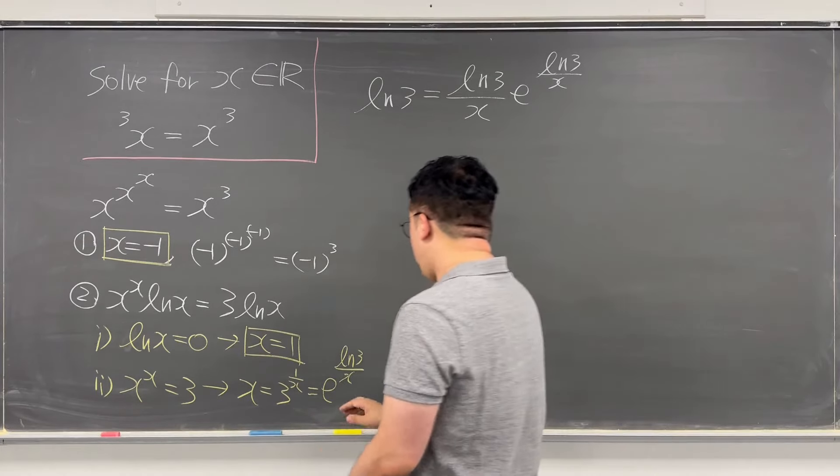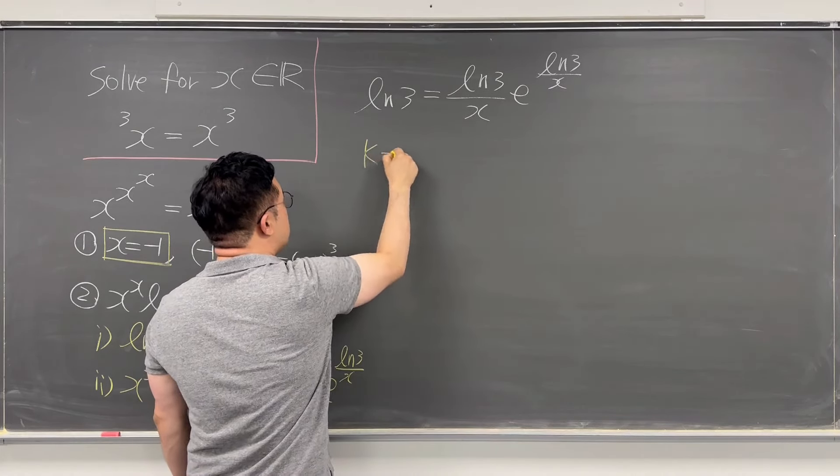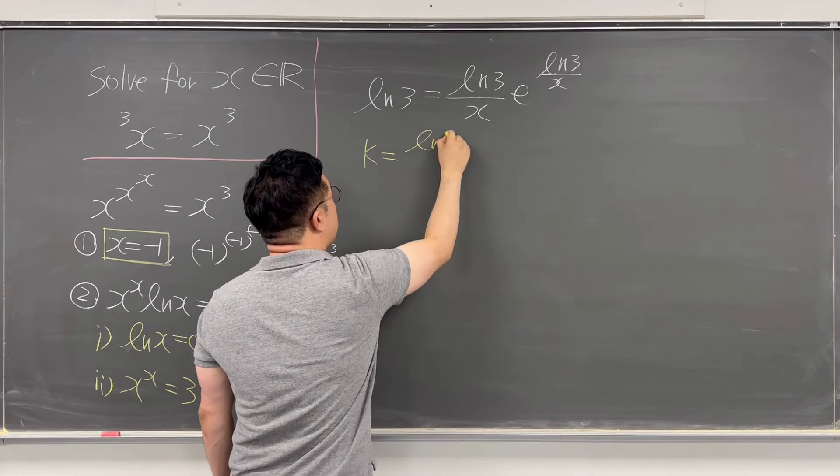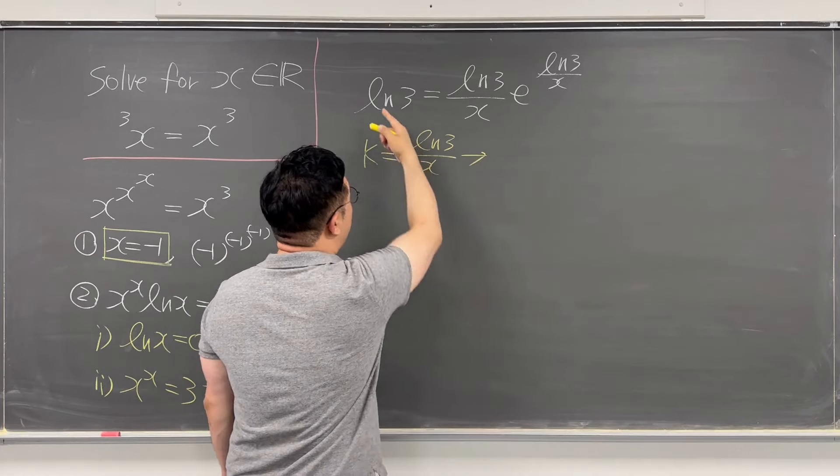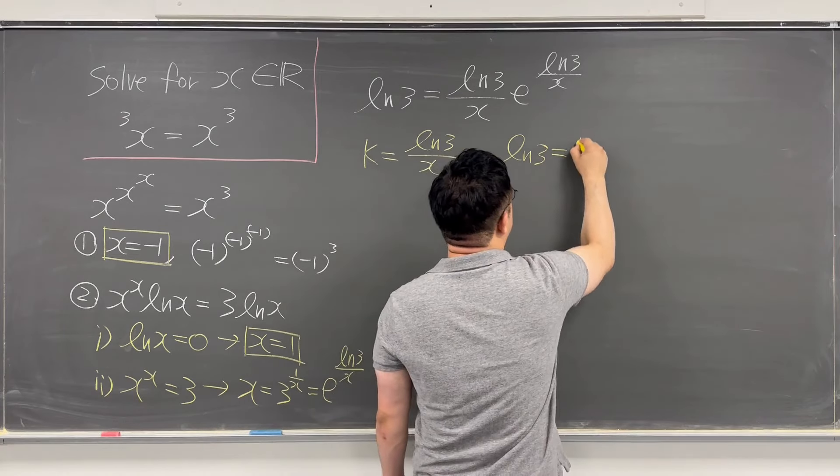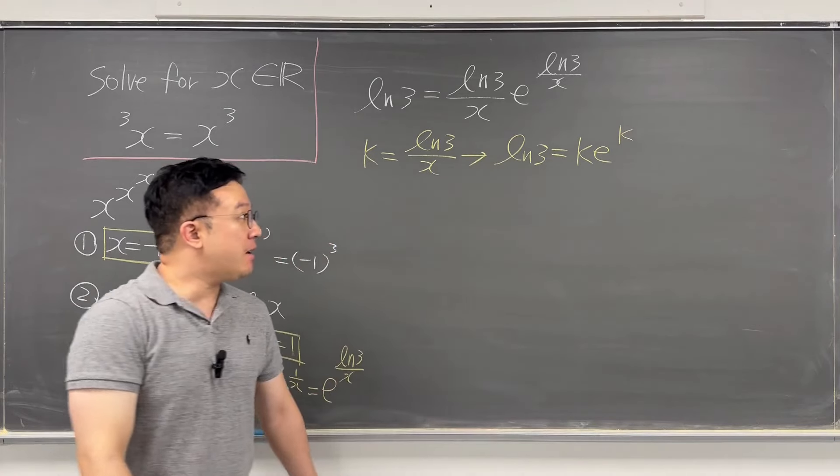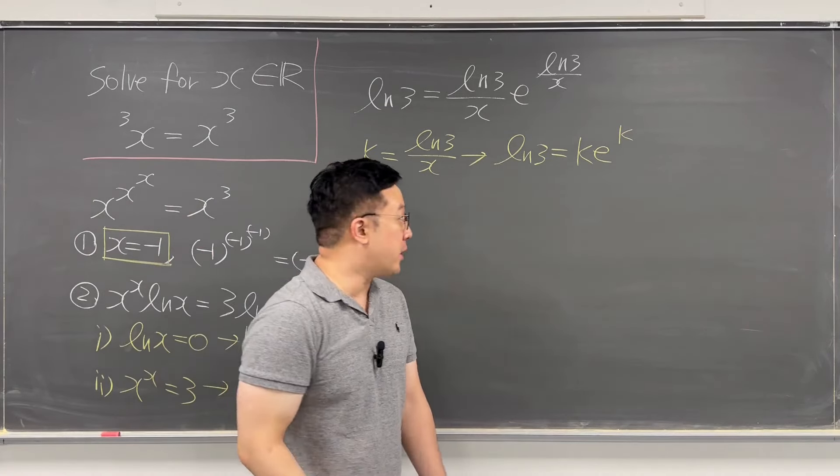So that's why if you call ln 3 over x as k, then what you have is ln 3 is equal to k times e to the power of k. The exact form for the Lambert W function that we wanted.